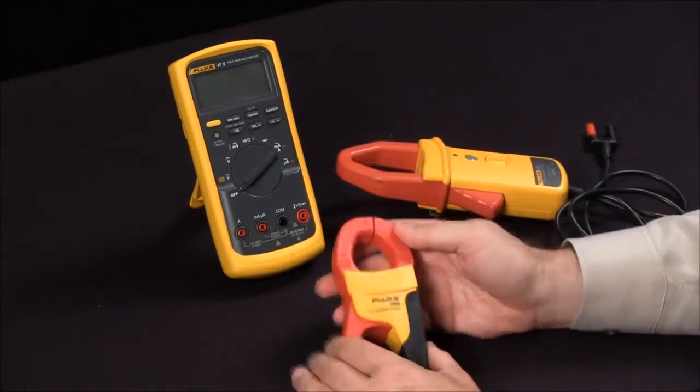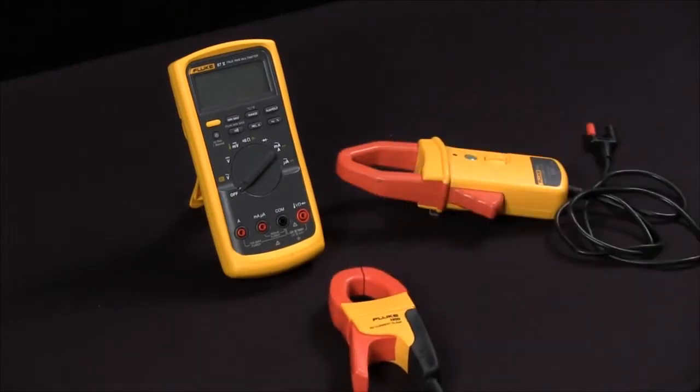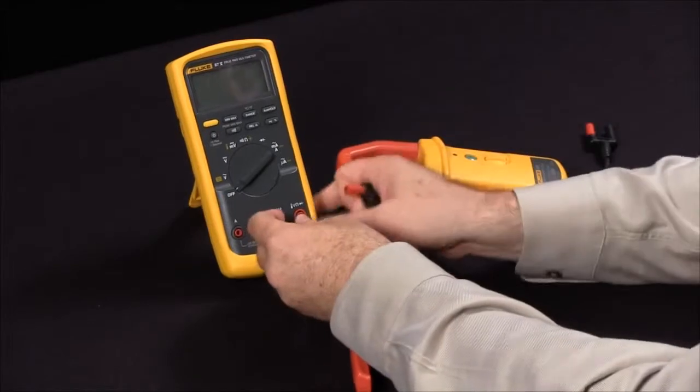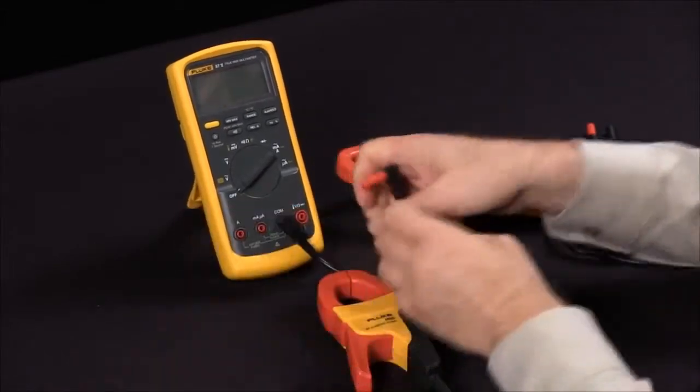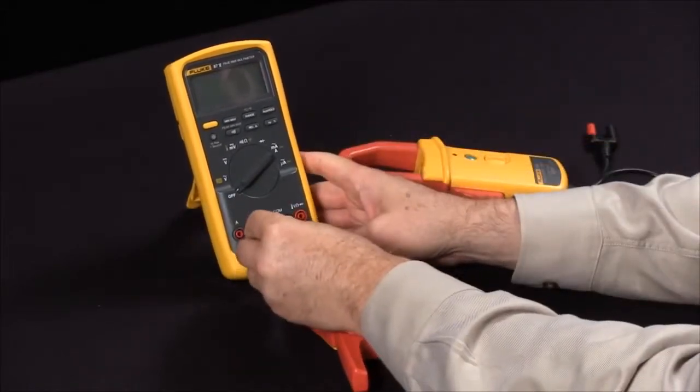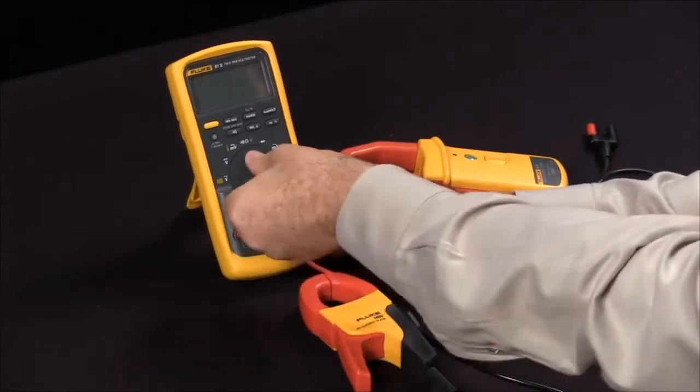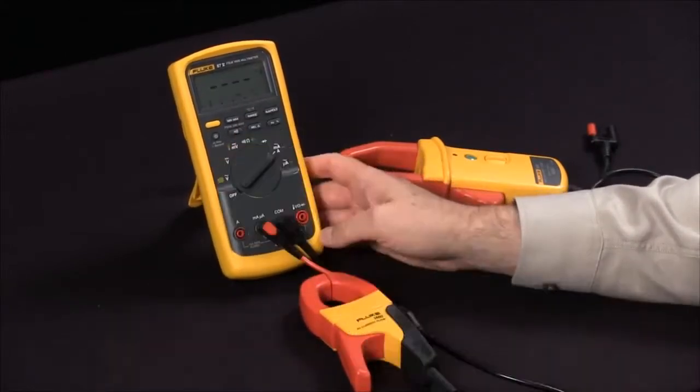To measure AC current, simply insert your test leads into the jacks. In this case, you would go into your common as well as your milliamp jacks, then set your meter to measure on milliamps.